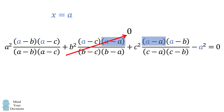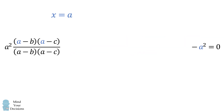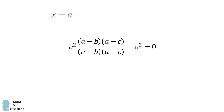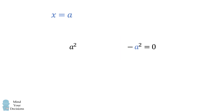We also have a factor of a minus a in the third term, so this will also be equal to zero, and the entire third term will vanish. In the remaining second term, the numerator is exactly equal to the denominator, so they cancel out to one. The equation becomes a squared minus a squared equals zero — a true statement. Therefore x equals a is a solution to the original equation.